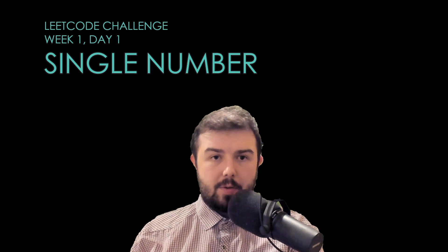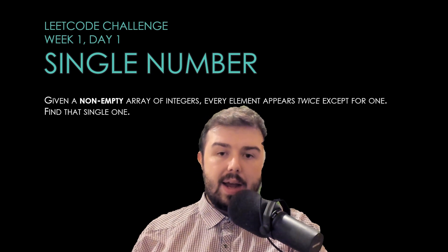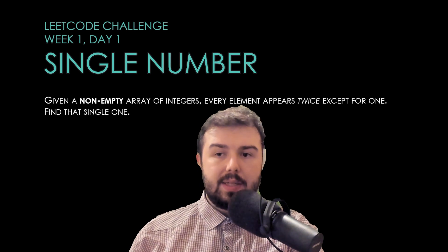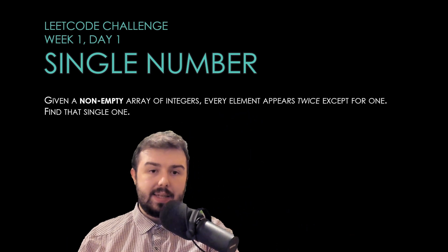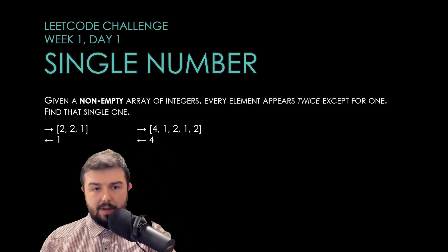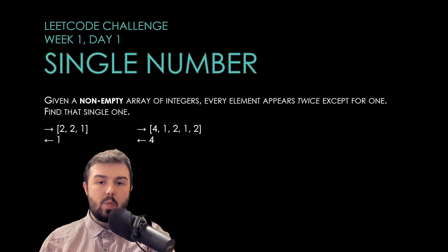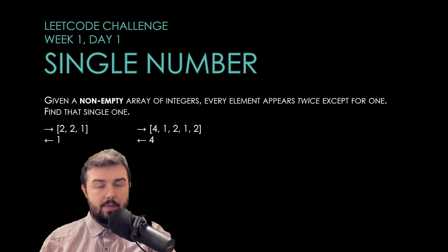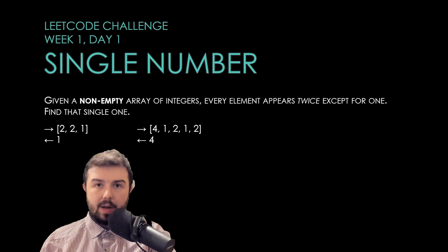First we will observe the problem itself, called Single Number. Given a non-empty array of integers, every element appears twice except for one. Find that single one. We have two examples: [2, 2, 1] where 1 is the answer, and [4, 1, 2, 1, 2] where 4 is the answer. If you already understand the problem, go to the description, click the link to the problem and try to solve it by yourself.